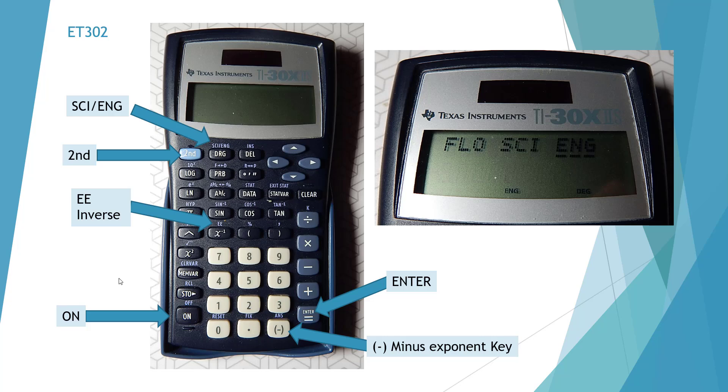Okay, so first thing we want to do is set up our calculator to do engineering notation. So we're going to push our second key, our science engineering key, and then use our arrows in order to select the engineering mode. That's what we're going to use in electronics. It's basically factors of times 10 to the 3.